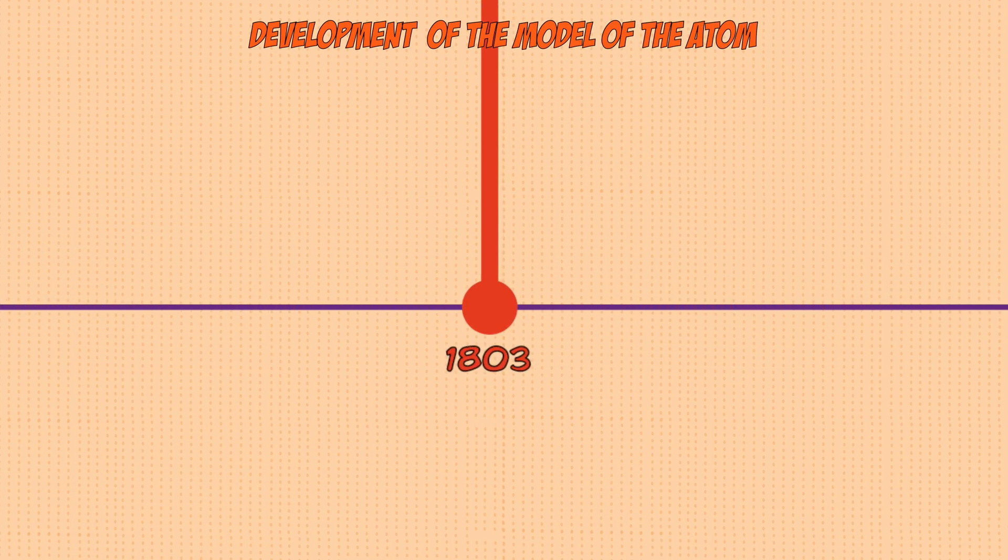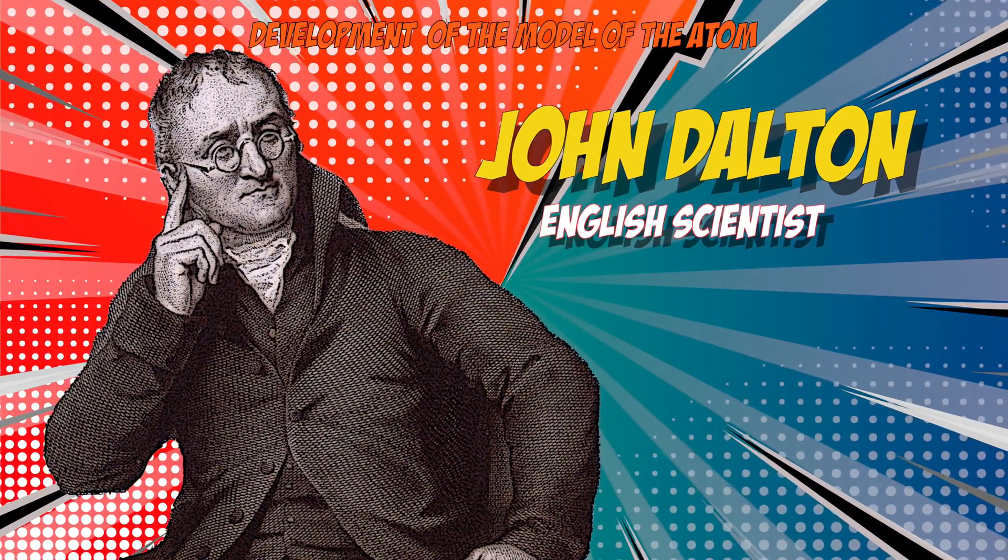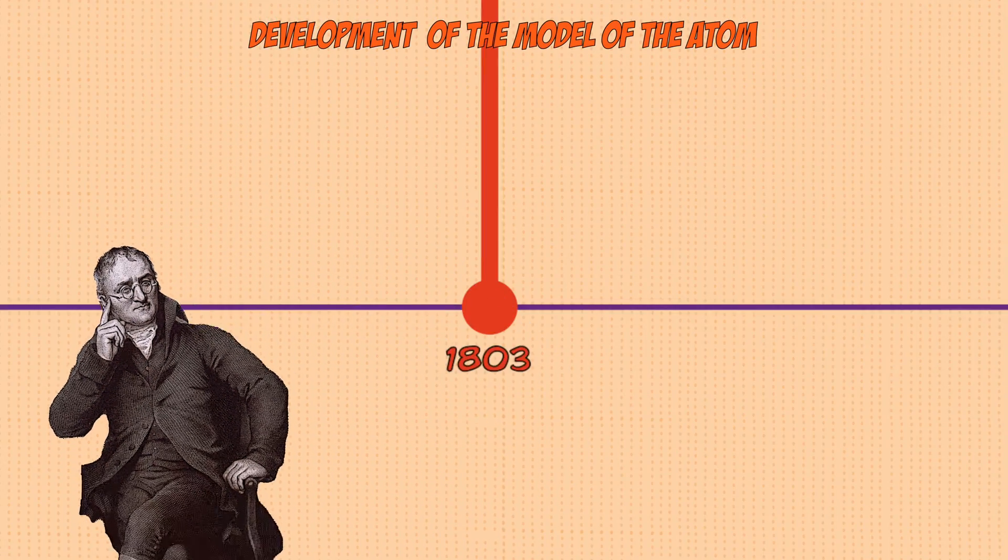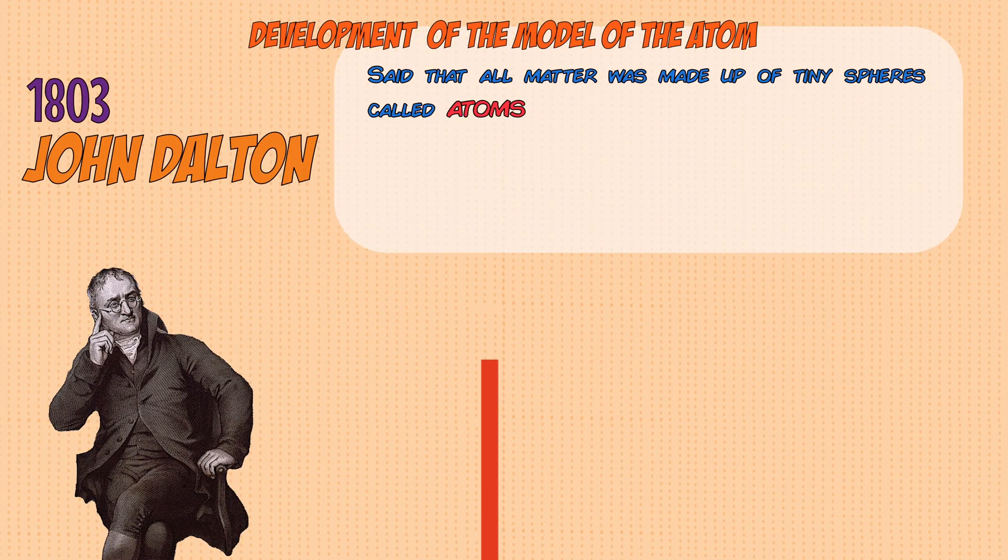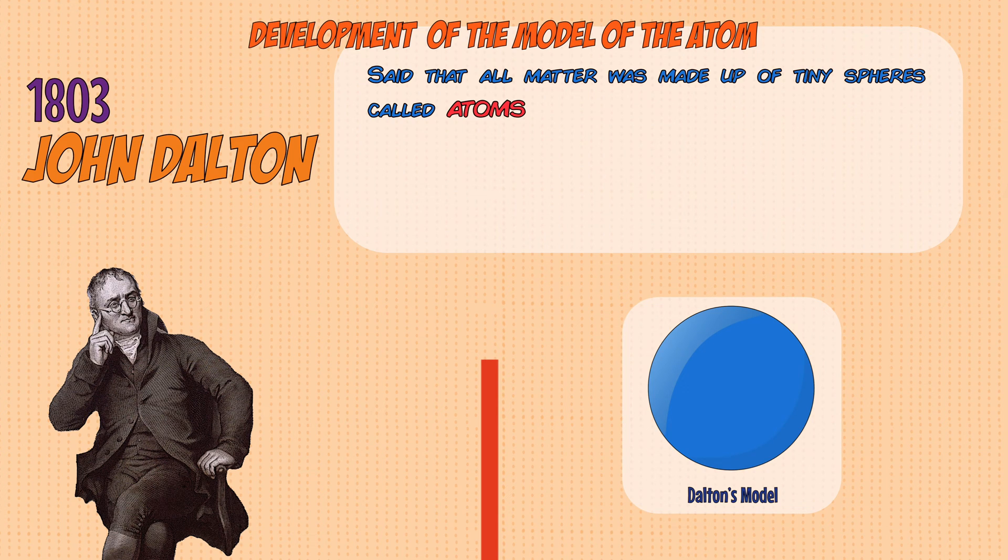If we fast forward to the 1800s, John Dalton, who was an English scientist, developed Democritus' ideas and said that all matter was made up of tiny spheres and he called them atoms.